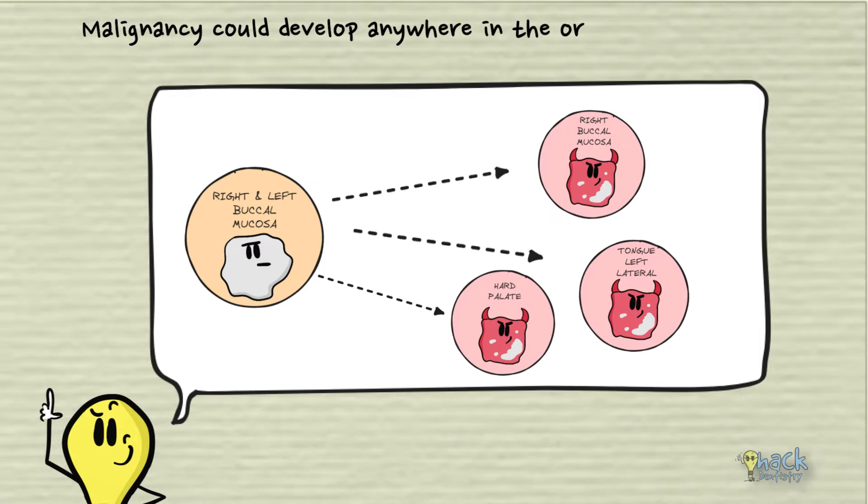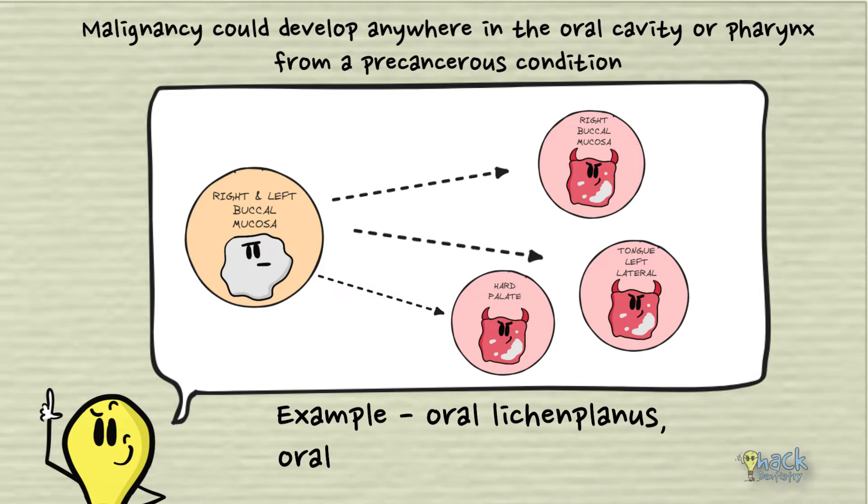Whereas malignancy could develop anywhere in the oral cavity or pharynx if the individual suffered from a precancerous condition like oral lichen planus or oral submucous fibrosis.